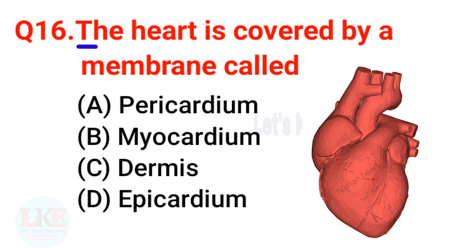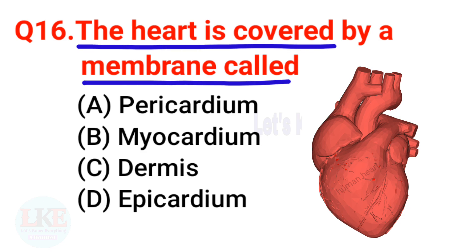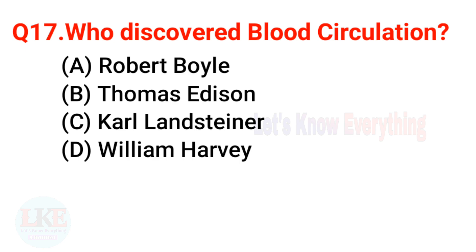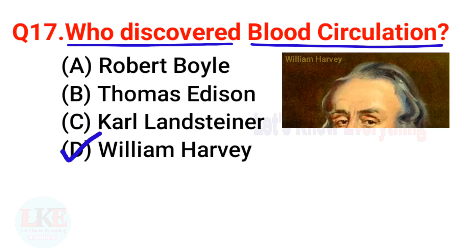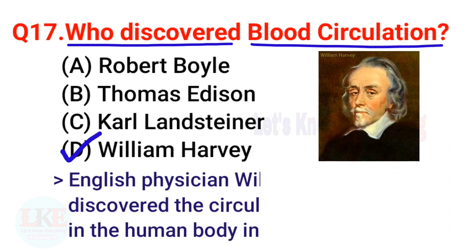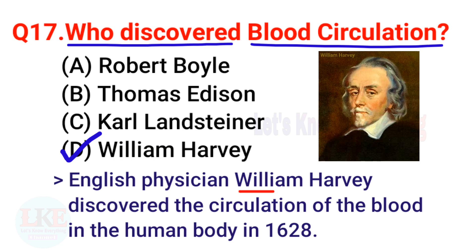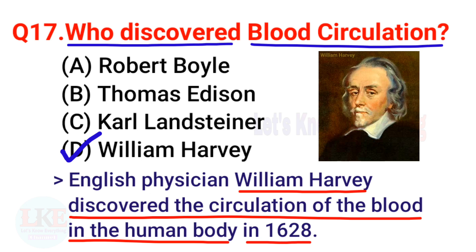Question 16: The heart is covered by a membrane called the pericardium. Question 17: Who discovered blood circulation? Options: A) Robert Boyle, B) Thomas Edison, C) Carl Landsteiner, D) William Harvey. The right answer is option D — William Harvey. English physician William Harvey discovered the circulation of blood in the human body in 1628.